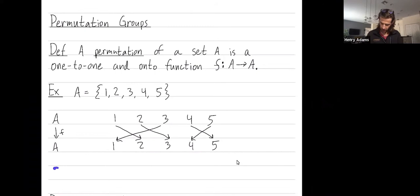Maybe I should write out briefly, this particular permutation f sends 1 to 2, it sends 2 to 3, it sends 3 to 1, it sends 4 to 5, and it sends 5 to 4.